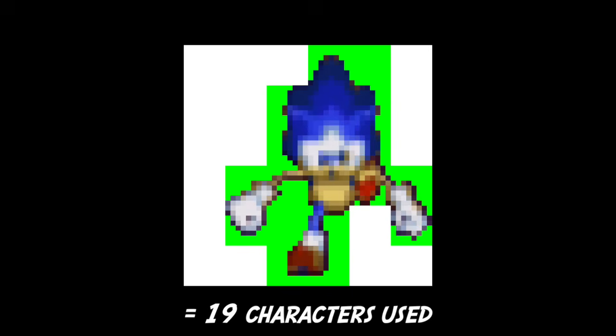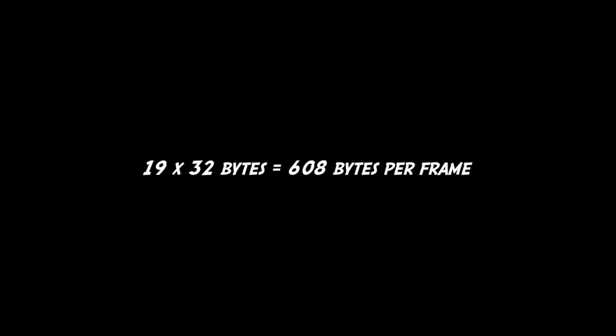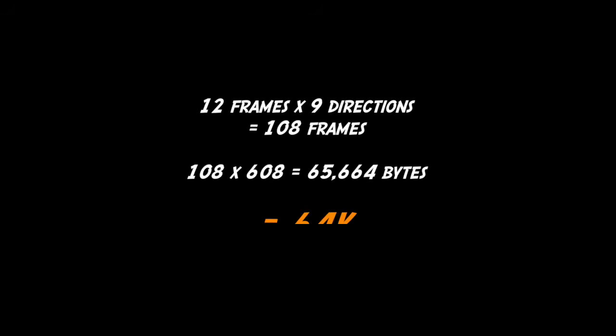So let's look at how the sprites would be arranged to do this. This uses 5 sprites instead of 4, which isn't the worst trade-off for the memory that we've saved. So if we take an average of 19 characters instead of 36, that means we only use just 608 bytes per frame, which means the total memory for the run animation has dropped to just 64k.